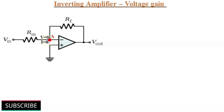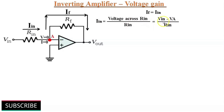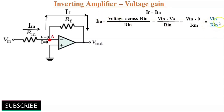Now we will observe the voltage gain of the inverting amplifier. The current I is equal to zero at point A or the inverting input. Therefore, current Iin flowing through Rin entirely flows through feedback resistor RF. In other words, IF is equal to Iin. Now we will calculate Iin. Iin is equal to Vin divided by Rin. That is equal to the voltage across Rin divided by Rin, which means Vin minus voltage at point A divided by Rin. Since voltage at point A is zero, that gives Vin minus zero divided by Rin, which comes to Vin by Rin.